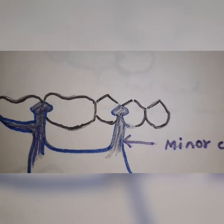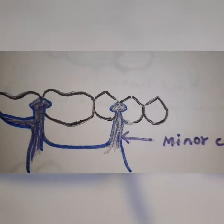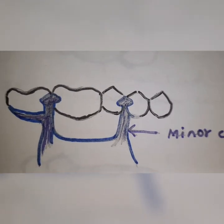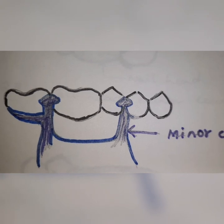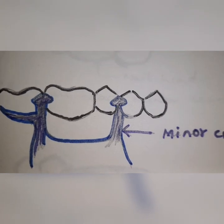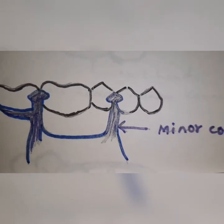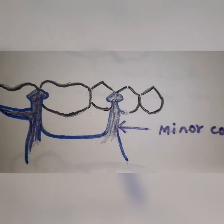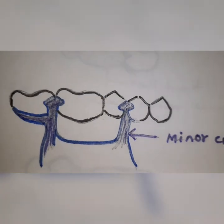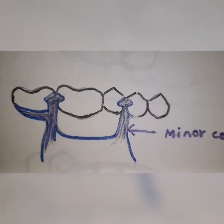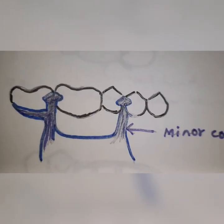Minor connectors should lie interproximally, as already mentioned in the design considerations. They should be broad buccolingually and thin mesiodistally. A minor connector is never placed on the convex lingual surface of the tooth.